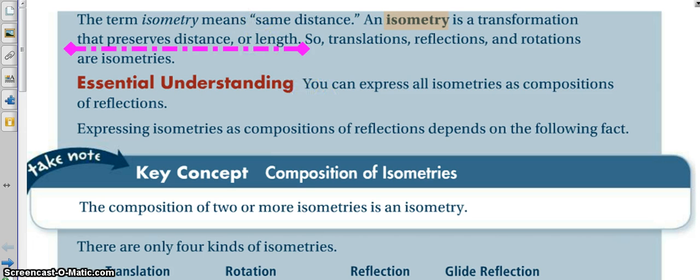Now, this seems kind of complicated, but if we break it down first, an isometry is just a transformation that preserves distance or length. So, everything we've talked about so far - our translations, our reflections, and our rotations - are all isometries.